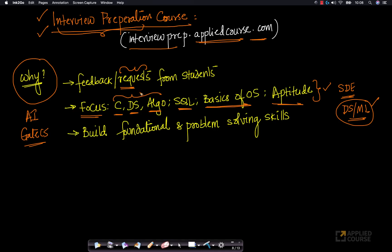The whole objective of this course is to build foundational computer science knowledge amongst our students and also teach them how to solve real problems, because most companies are looking for these two skills — foundational knowledge of computer science and strong problem-solving skills.